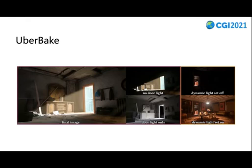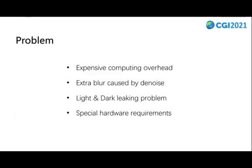The last one, UberBake, was proposed at the last SIGGRAPH edition. This method enhances the traditional baking system to handle limited dynamic scene and lighting changes. To sum up, the existing methods face the following problems: expensive computational overhead, extra blur caused by denoising, light and shadow leaking problems, and special hardware requirements. To solve these problems, we developed our global illumination solution, STF-DDGI.